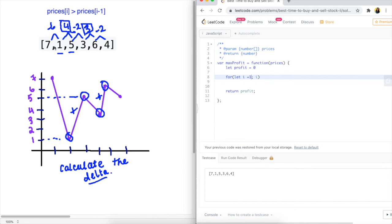When that is the case, that's when we need to accumulate to the profit. So that's why we're starting at 1 here. i equals 1, i is less than prices.length, and i plus plus.